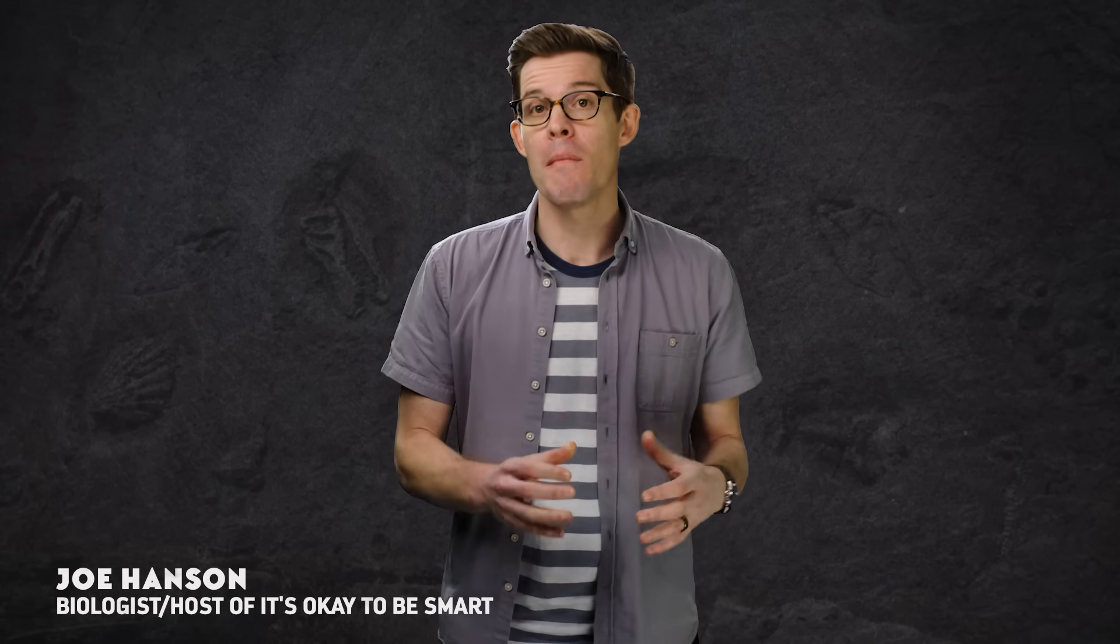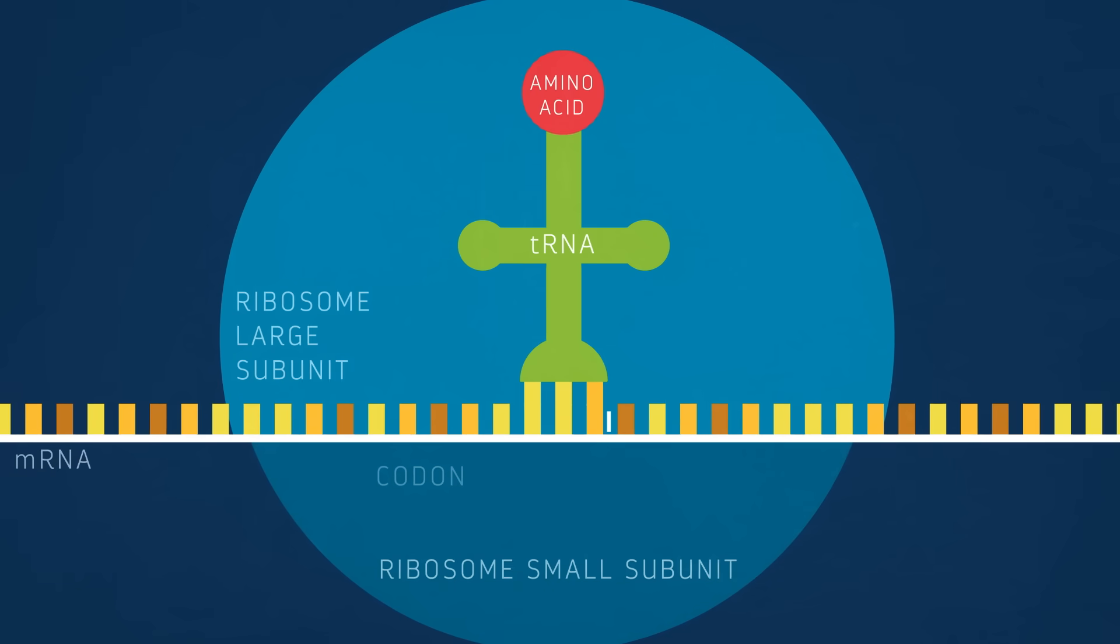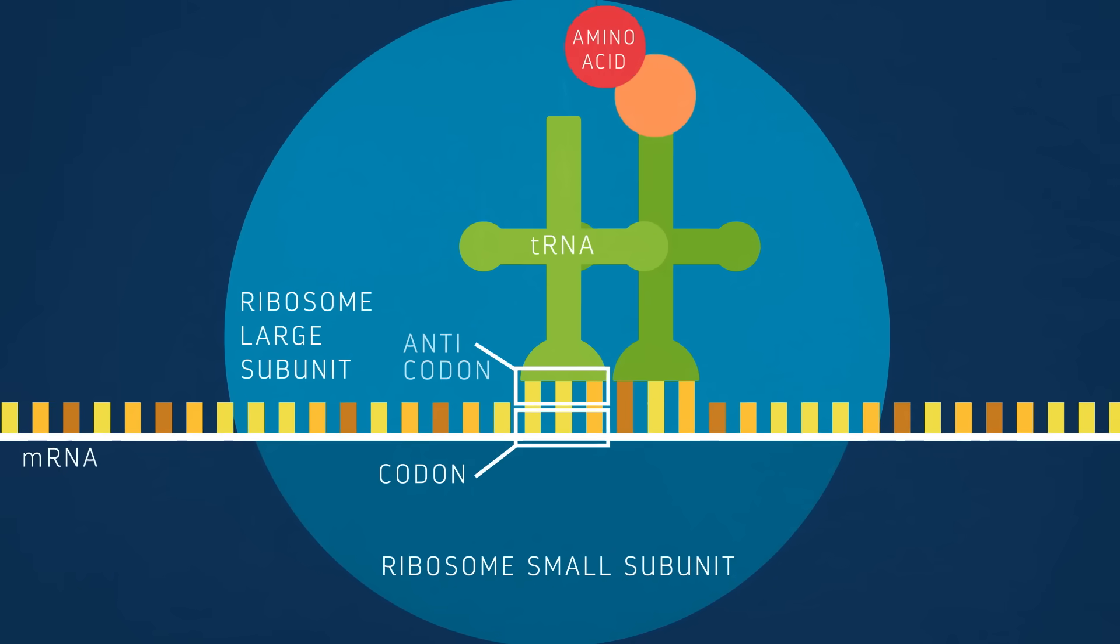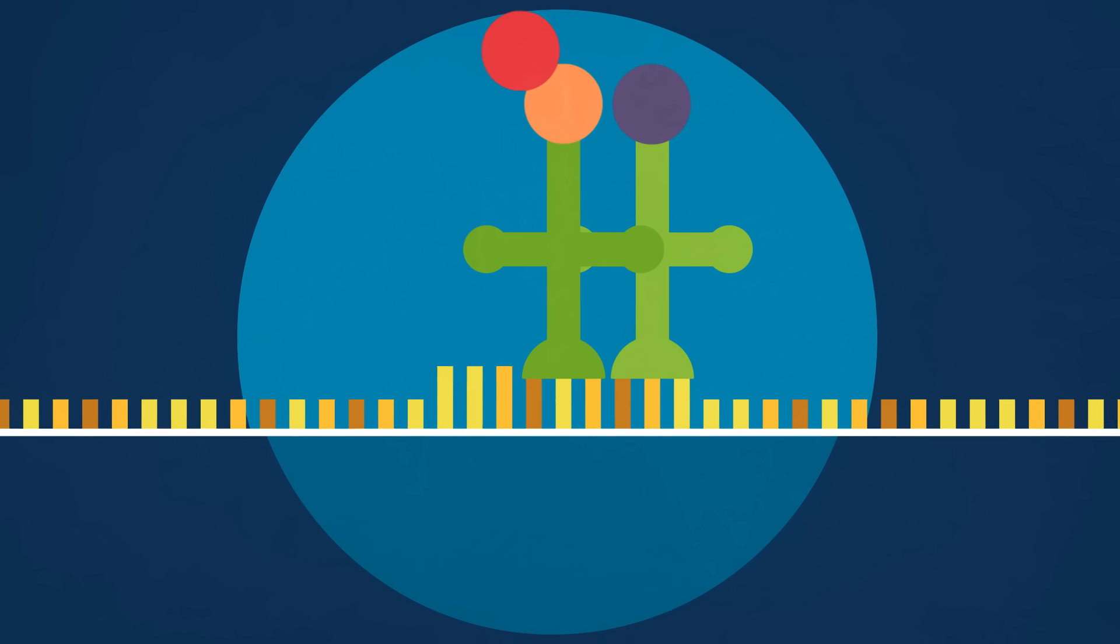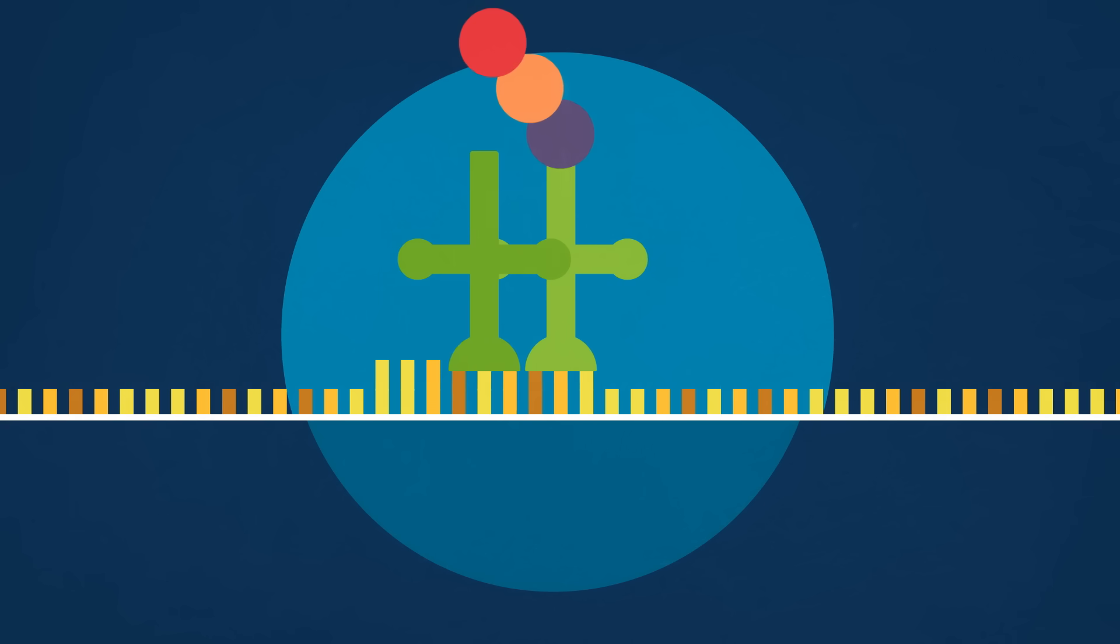Now, RNA, in addition to storing information, can do stuff, biochemical reactions, like we see in the ribosome, where RNA is used to not only code for, but also build proteins. Early on, RNA machines like the ribosome would have evolved alongside genetics version 0.1.